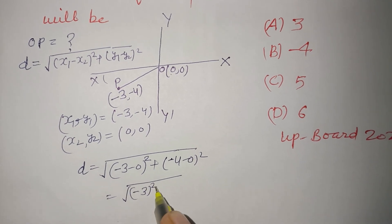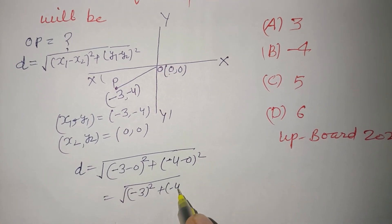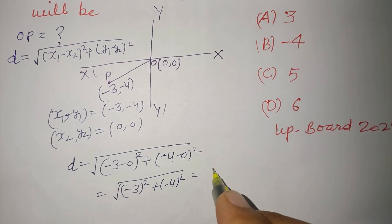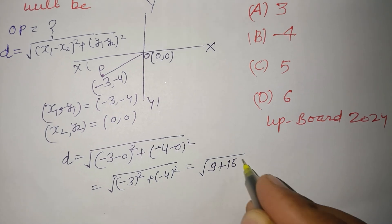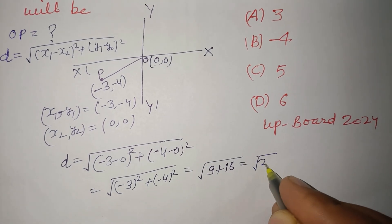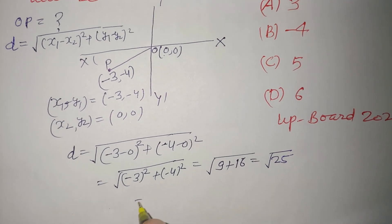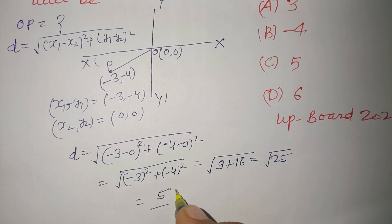And this will be the whole square of (-3) plus whole square of (-4), and this is 3² which is 9, plus 4² which is 16. So this will be √25 which is 5.